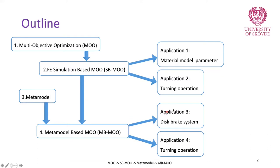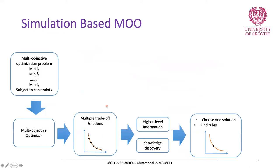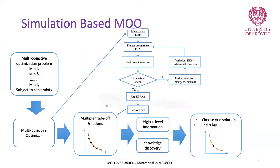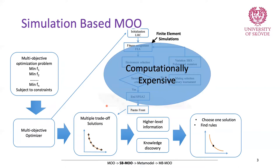This new application is similar to application two — it's the same problem, but instead of running simulations, we use a metamodel. You will see the difference between using a metamodel and running just simulations. If you want to have finite element simulations in your multi-objective optimization, it will be placed in the loop and it is computationally expensive. One method was to automate the whole process, but the second method is using a metamodel.